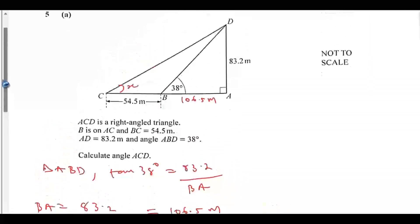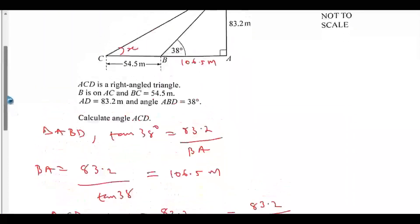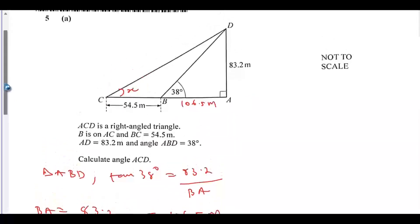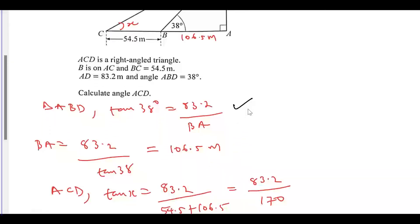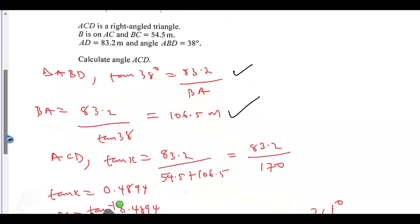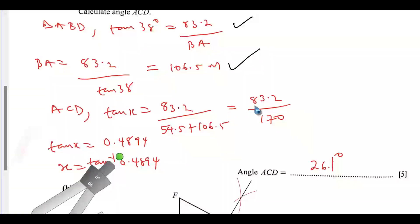This is question 5A. We are asked to find the angle of ACD. This is correct, this is correct. The error is here when I added 54.5 to 106.5. It should be 161, but I wrote this. This is an error. What we should have, this should have been, it will be 161.